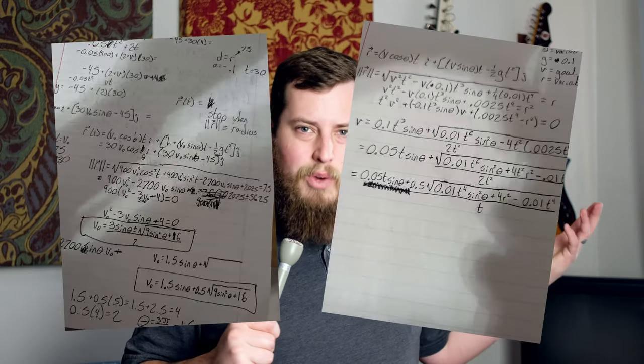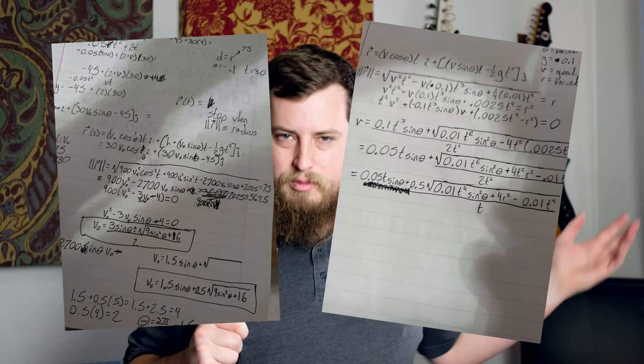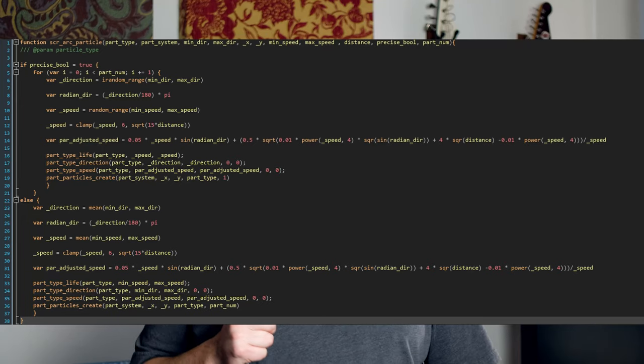I wanted the particles to have a bit of an arc to them, but I wanted them to all go the same distance, not affected by gravity — so there was a lot of math that had to go into that. I actually had to bring in my brother. I'll show you the notes he sent me while he was working on it. Once I saw these, I knew I was in way over my head. This is the solution we came up with, for any nerds out there.